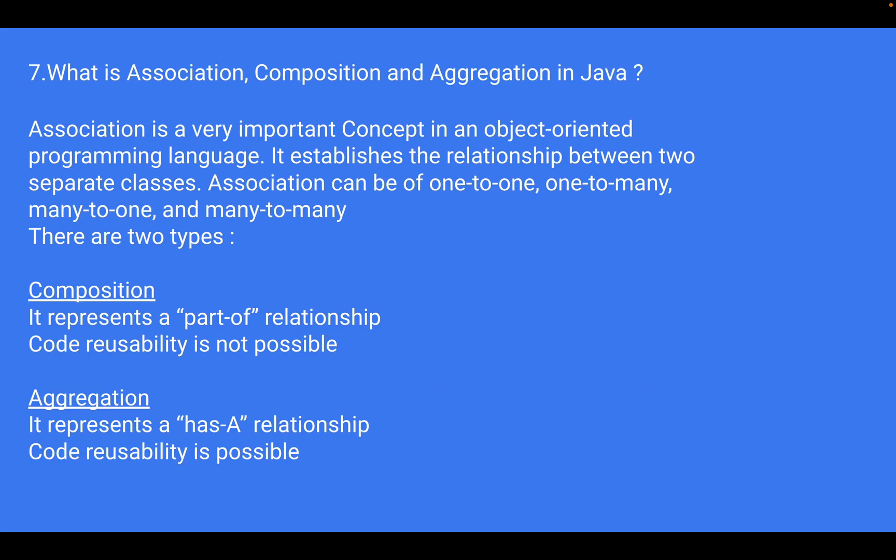The next question is: what is association, composition, and aggregation in Java? Association is an important concept in object-oriented programming — it establishes a relationship between two separate classes and can be one-to-one, one-to-many, many-to-one, or many-to-many. There are two types of association: composition and aggregation. Composition represents a 'part of' relationship where reusability is not possible, whereas aggregation has a relationship where reusability is possible. I would suggest going through an example to understand it better.